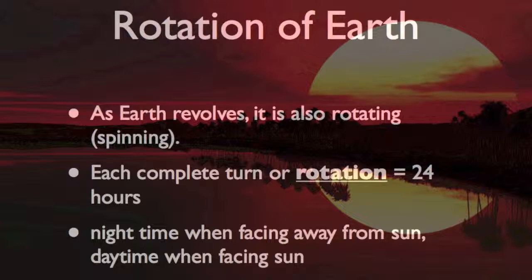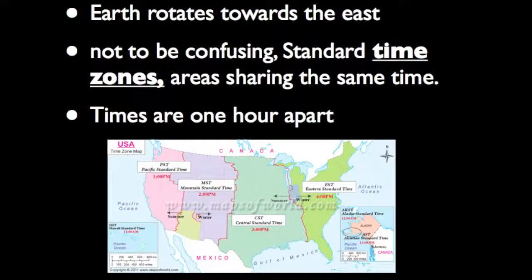No sunlight reaches that side of Earth — it is nighttime. Because Earth rotates toward the east, the day starts earlier in the east than it does farther west. Over short distances, the time difference is small. For example, the sun rises about four minutes earlier in Beaumont, Texas, than it does in Houston, 70 miles to the west. But if every town had its own local time, people would have a hard time keeping track. So governments have agreed to divide the world into standard time zones, or areas sharing the same time.